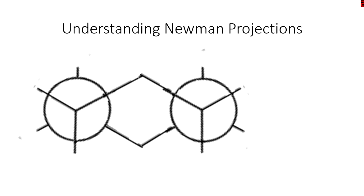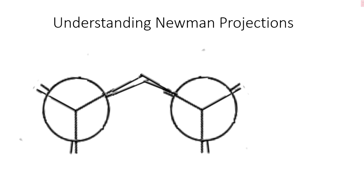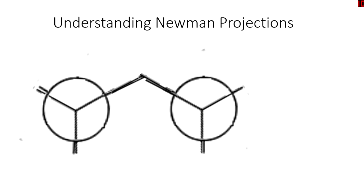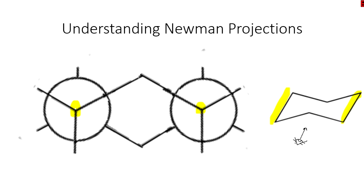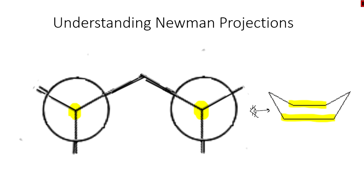So if we rotate only one bond, we make an eclipse structure. And this eclipse structure actually is the boat conformation. So you can see the difference between boat conformation and the chair conformation in terms of Newman projections. All it is is the chair conformation is the staggered, and the boat is the eclipsed.